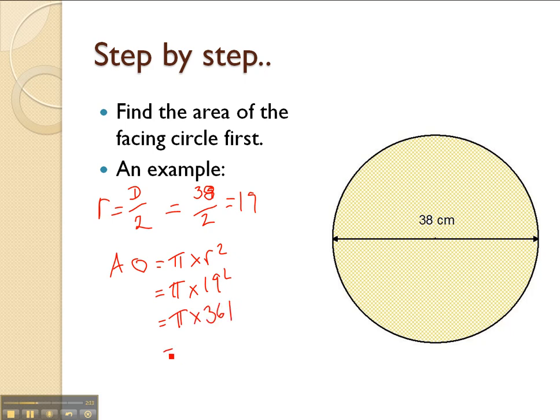Or 1134.12 centimetres squared. It's important to note that area is measured in units squared. The units in this case are centimetres, so the area is 1134.12 centimetres squared.